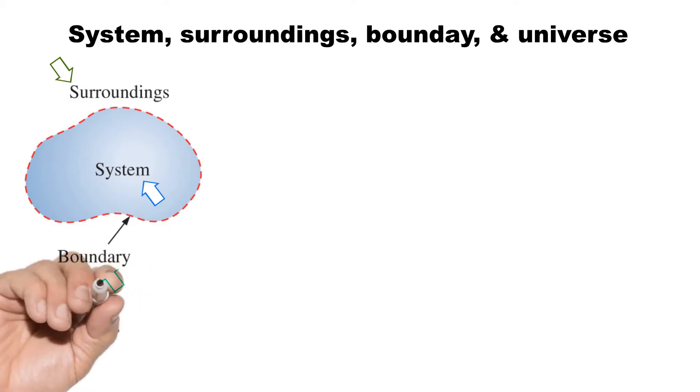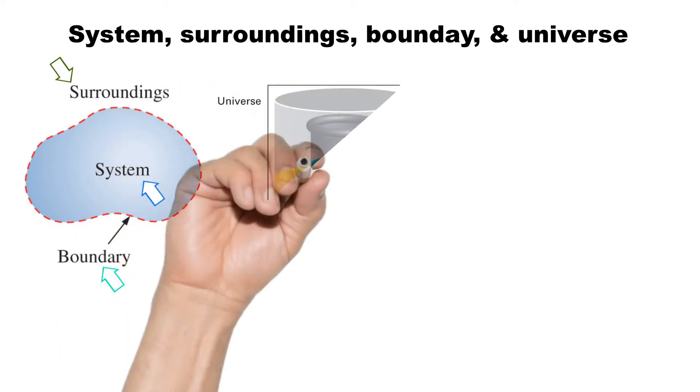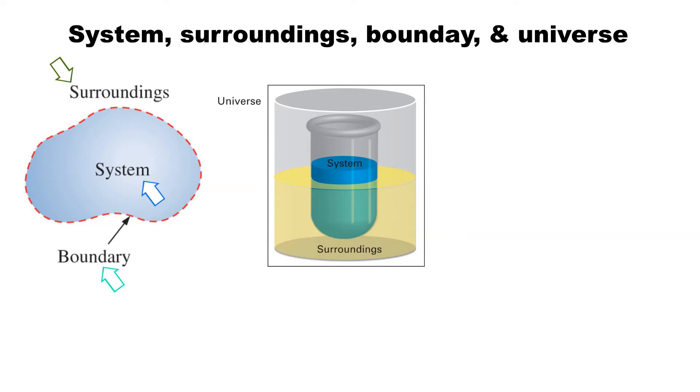The real or imaginary surface that separates the system from its surroundings is called the boundary. The universe is the entire region that includes the system and surroundings.